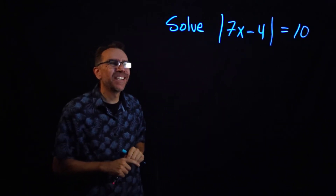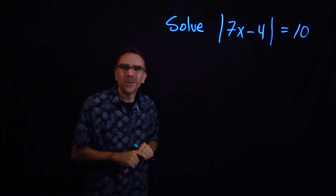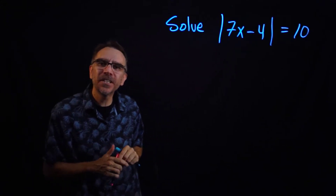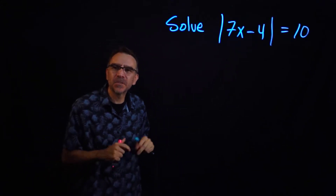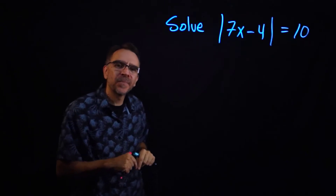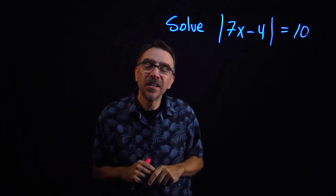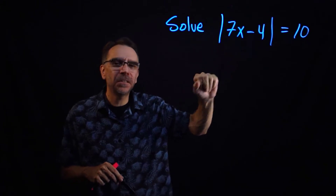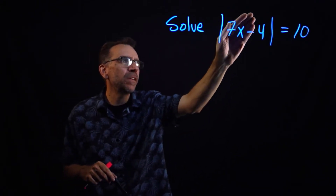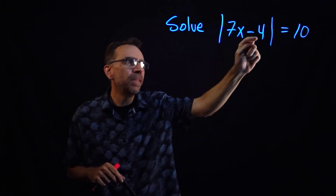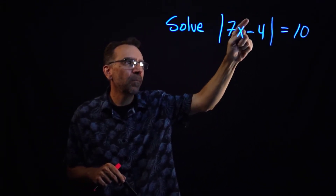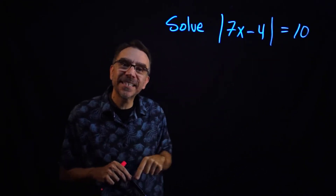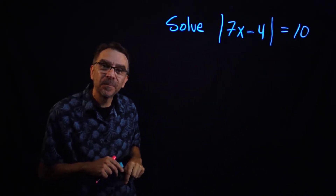In this video we're going to go over solving absolute value equations and we'll do four different kinds. We'll start with an easier one and work our way up. The idea is that if you have an absolute value, you want to set the expression on the inside equal to plus or minus that number.